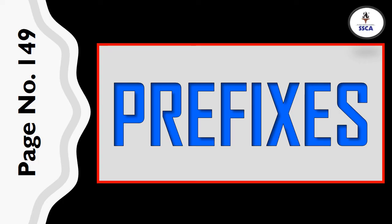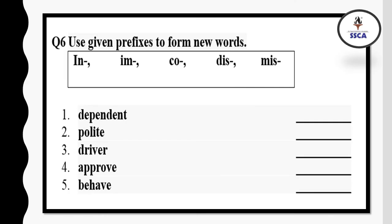For word formation, open page number 149 of your book and study about prefixes. When you study about prefixes on page number 149, you can solve this exercise easily. Here you have five prefixes — those are the letter groups which you will place at the beginning of a word.